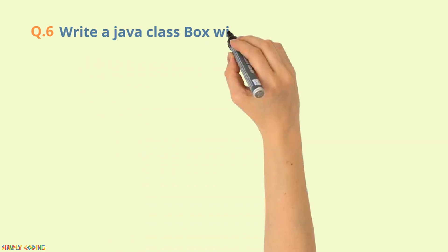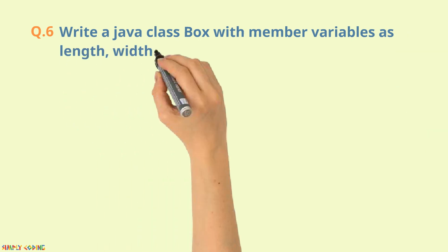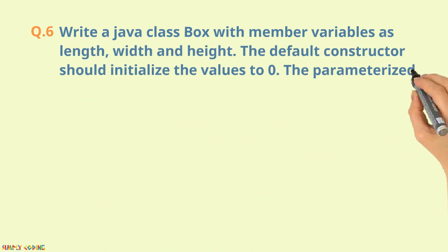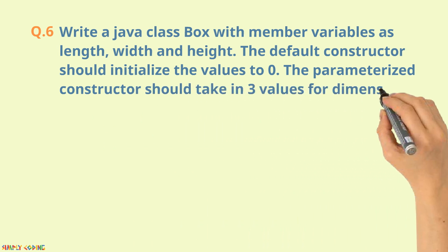Another type of question could be to write a Java class box with member variables such as length, width and height. The default constructor should initialize the values to zero. The parameterized constructor should take in three values for the dimensions.